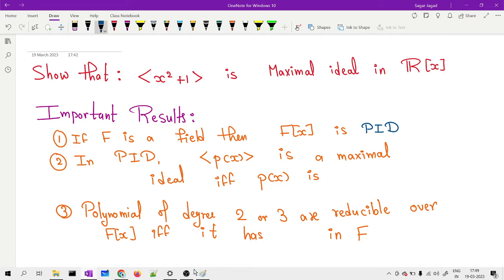Since ℝ is a field, ℝ[x] becomes PID. So ℝ[x] is PID, which means every ideal in it is a principal ideal.